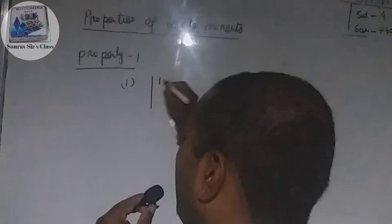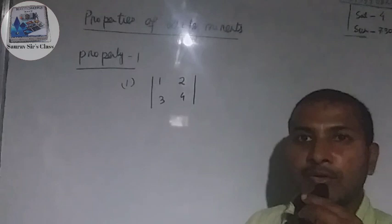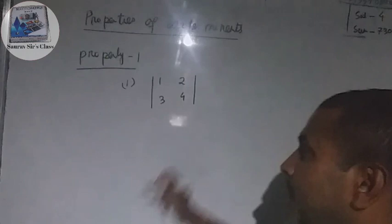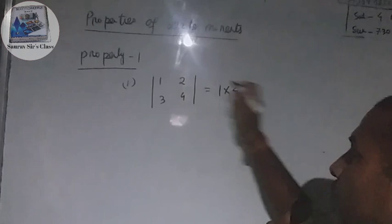For example, I have the determinant of [1, 2; 3, 4]. The determinant value is calculated by cross-multiplying: 1 into 4 minus 3 into 2, which gives 4 minus 6, which equals minus 2.